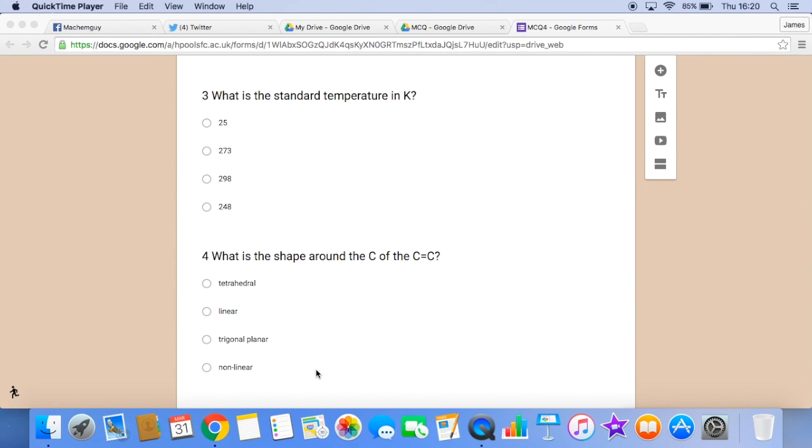What is the shape around the carbon of the carbon-carbon double bond? The answer is trigonal planar.